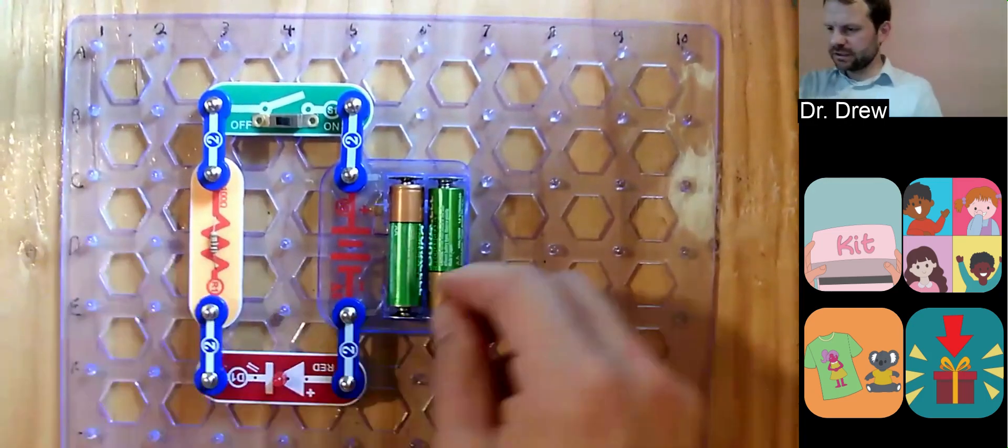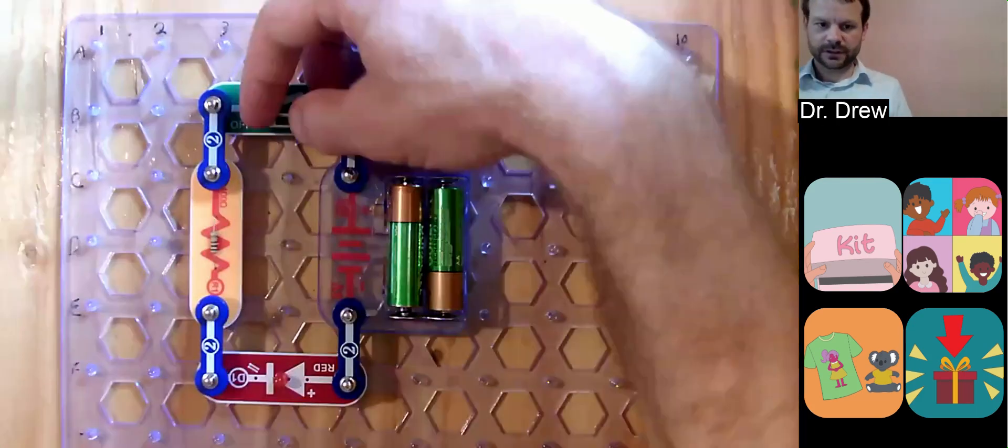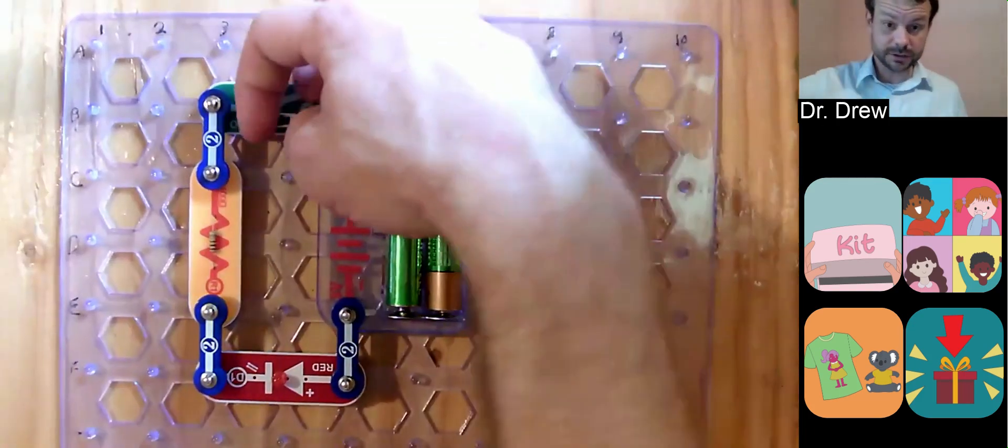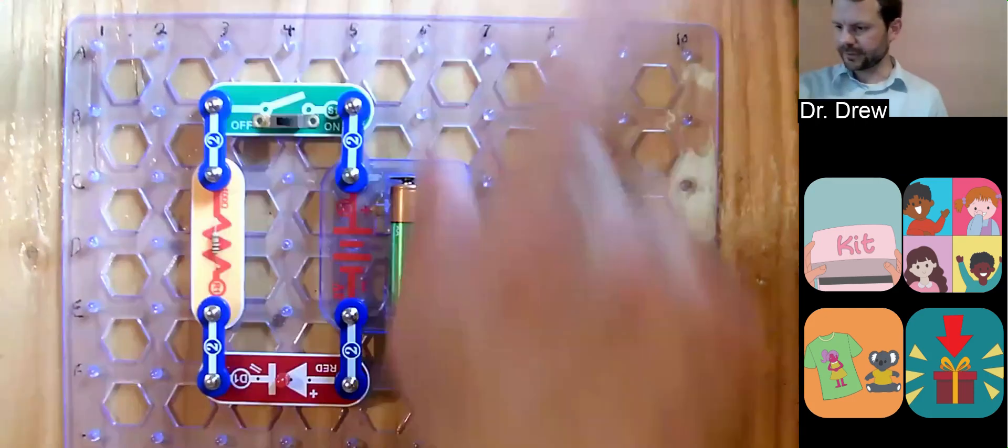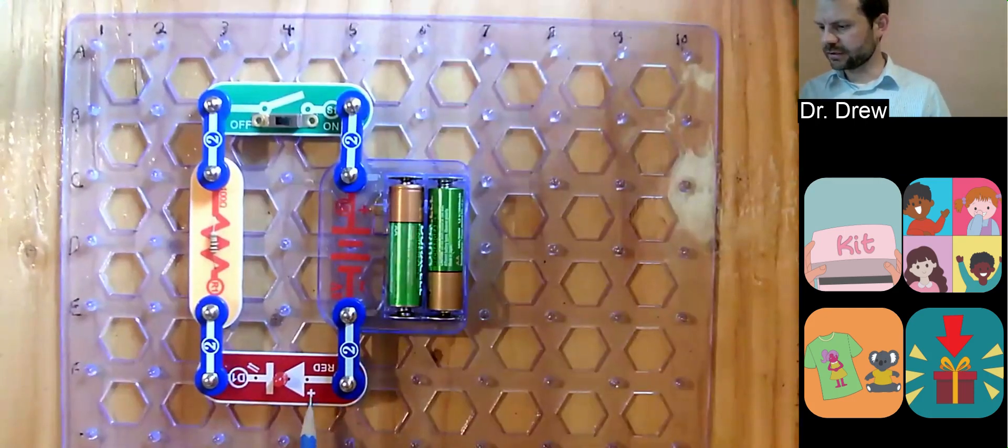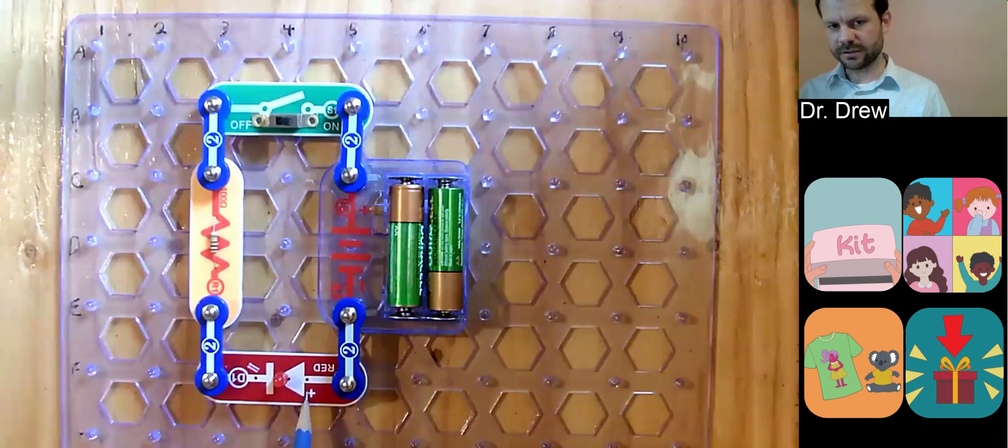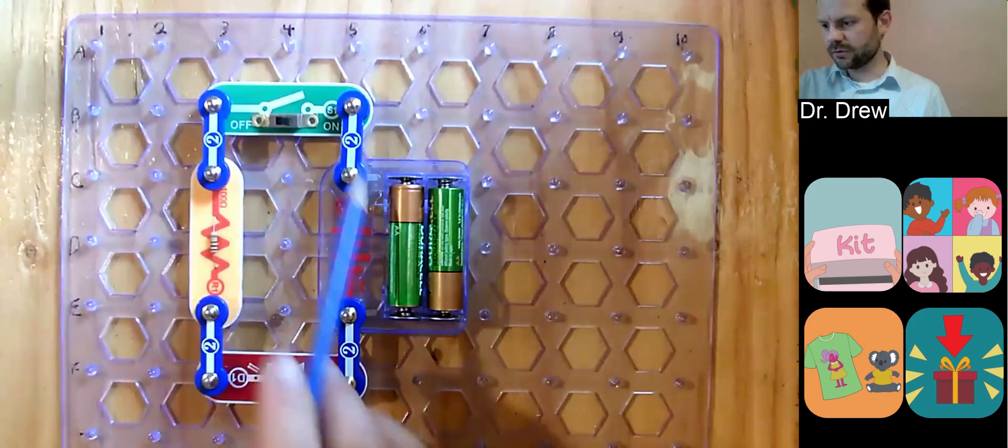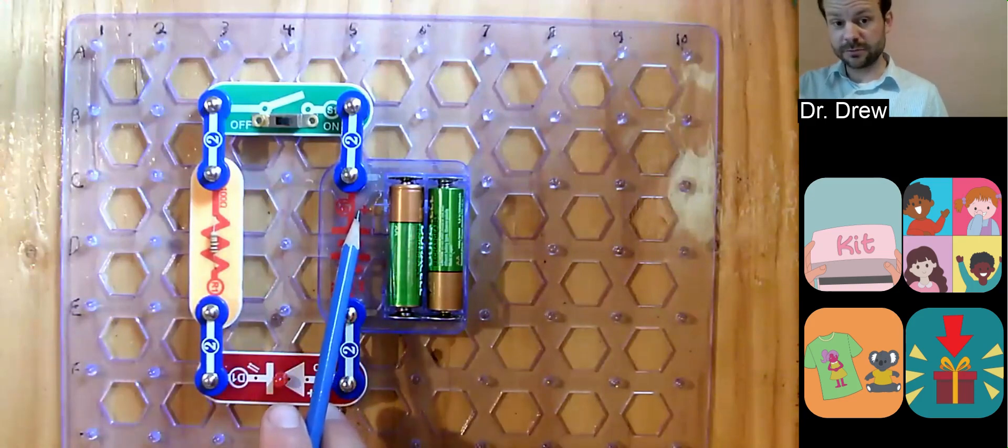But sometimes our LED doesn't work, and the light emitting diode doesn't emit any light. And in that case, we want to check if the positive on it is towards the positive terminal of the battery pack.